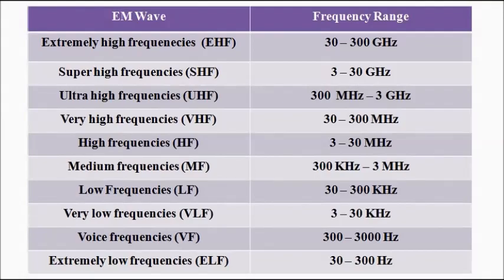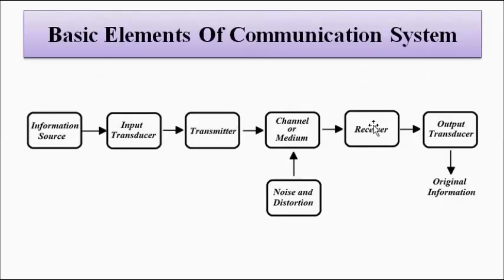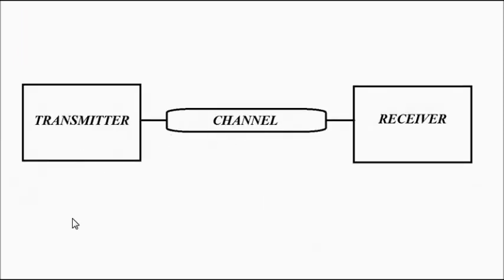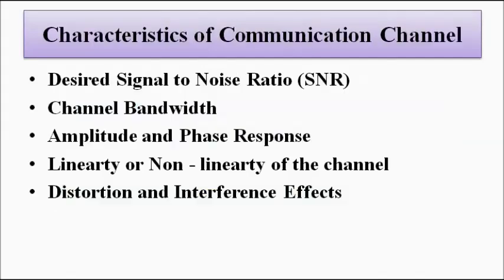In wired communication, the channel serves as the connecting link between transmitter and receiver with a physical connection. It can be a twisted pair cable, a coaxial cable, or an optical fiber. Various characteristics are taken into consideration for the selection of a communication channel.